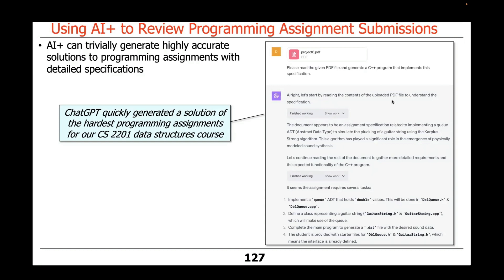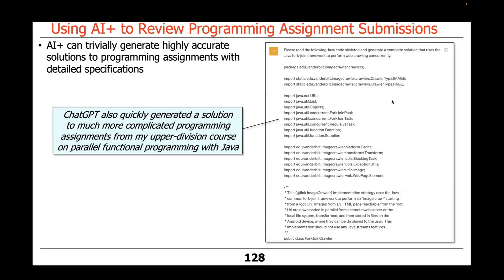I thought that teaching more advanced courses with complex topics like concurrency, parallel programming, microservices, networking, and databases meant my assignments would be immune from this reverse engineering. Well, it turned out to my horror when I started my fall course that when I gave the specifications to ChatGPT, it quickly generated a solution pretty much spot on to mine — an upper division course on parallel function programming in Java. That had the light bulb go off: I need to rethink how to create assignments that are harder to reverse engineer.